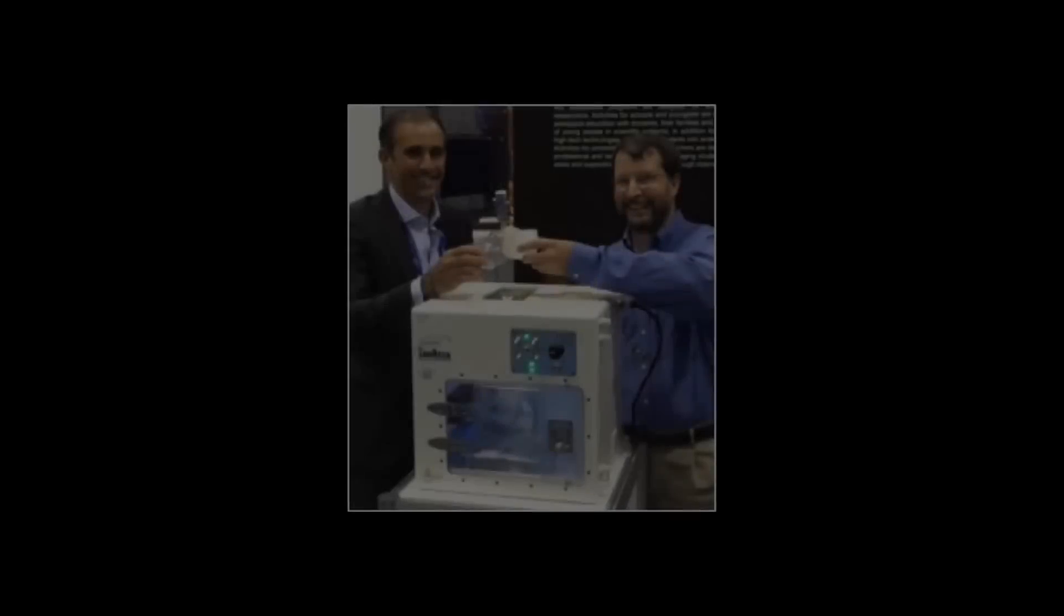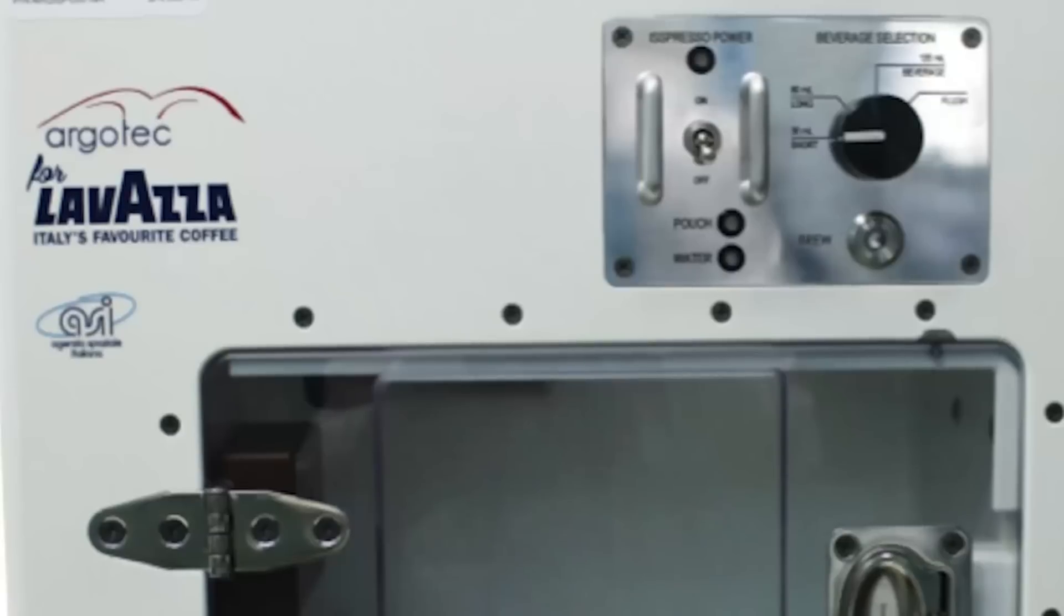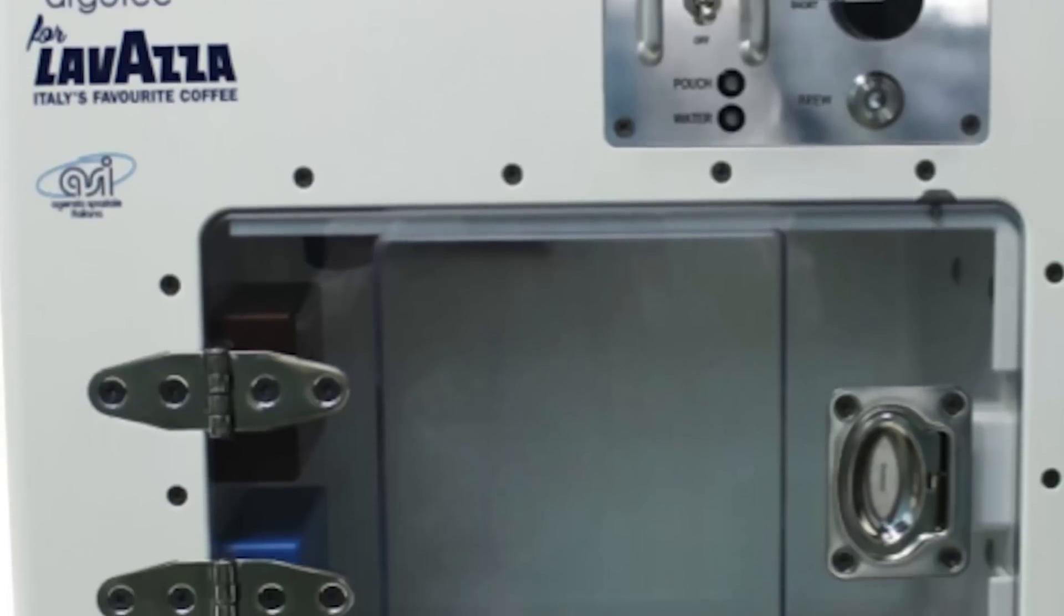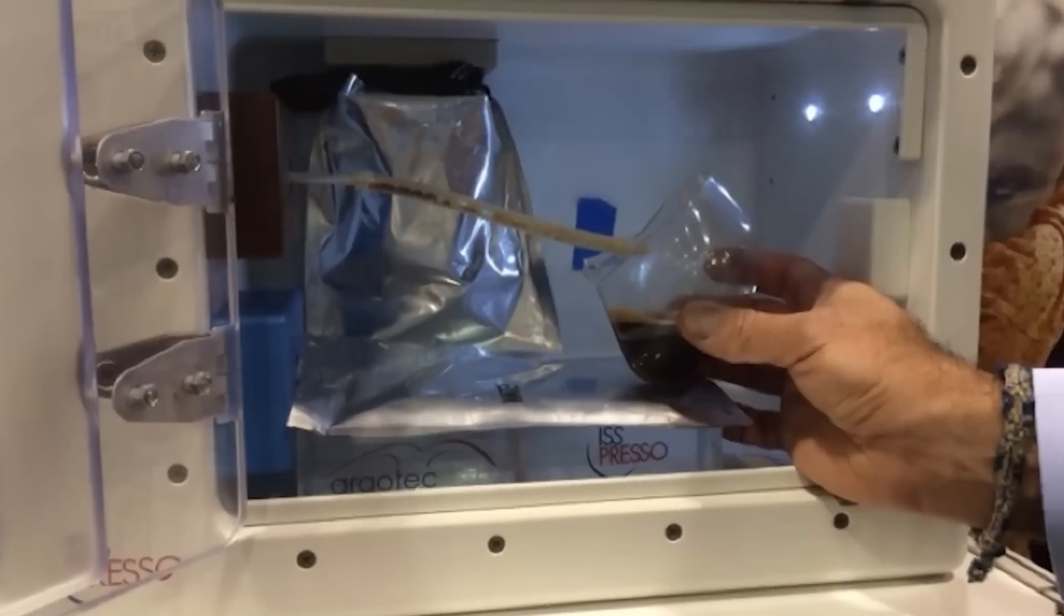We heard that the Italians were sending an espresso machine to an Italian astronaut on the space station. When we heard they were going to be drinking espresso, that complicated drink, we knew that drink is heavily dominated by gravity on Earth.